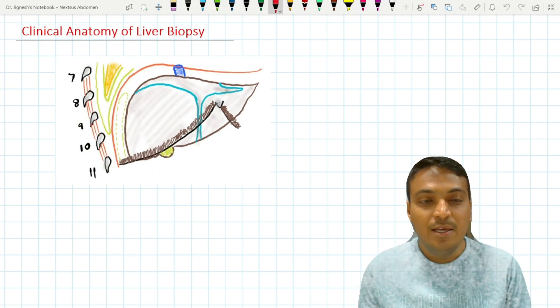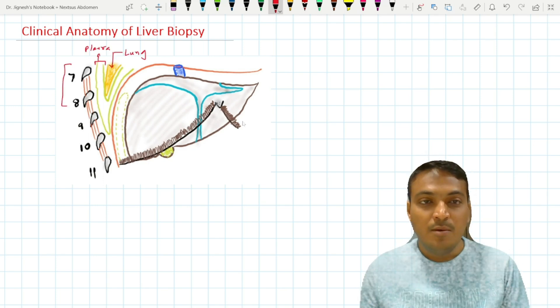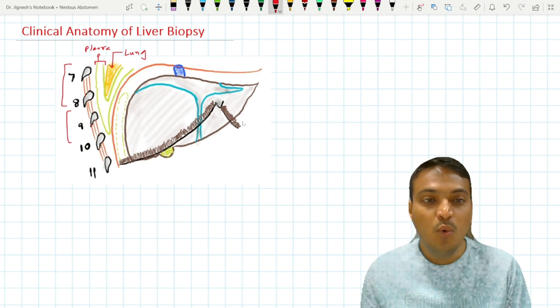When we see the upper one third of the right surface of the liver, it is related to the lungs and the pleura both. The middle one third of the right surface of the liver is related to the pleura only, no lungs. And in the lower one third, the right surface of the liver is related to no pleura, no lung.